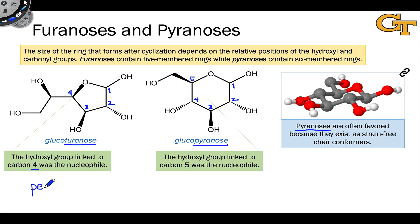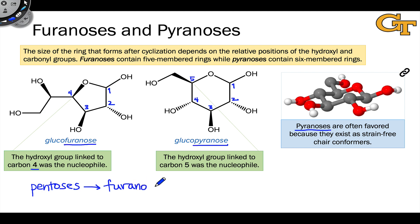On the other hand, there are some sugars that can only form furanoses. For example, the pentose ribose, which only contains five carbons within its backbone, tends to form a five-membered furanose ring.